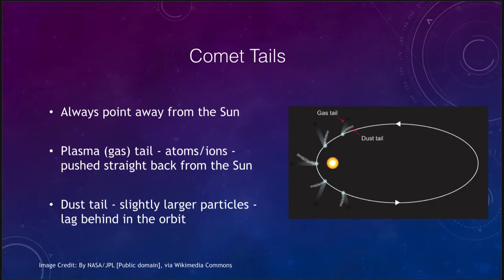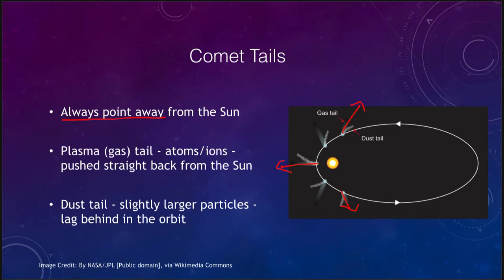The comet tails will always point away from the sun, so you can always tell where the sun is in the sky relative to a comet by the direction the tails are pointing. As the comet comes into the solar system, they lag behind the comet. As the comet is leaving and heading back into the outer solar system, the tail goes first — so the tail actually leads the comet.